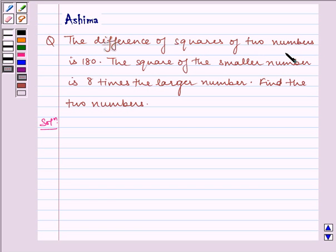The difference of squares of two numbers is 180. The square of the smaller number is 8 times the larger number. Find the two numbers.